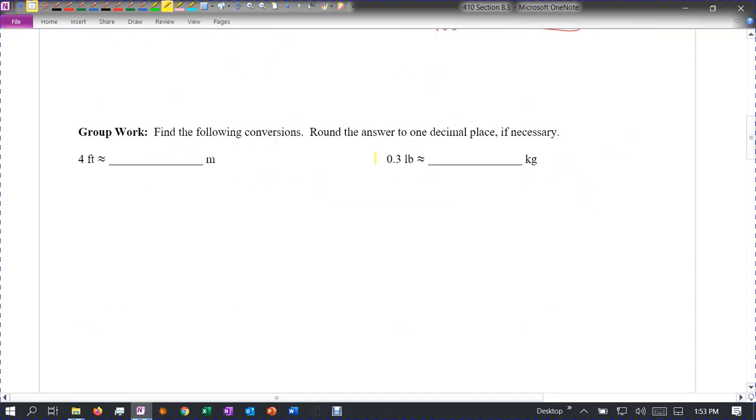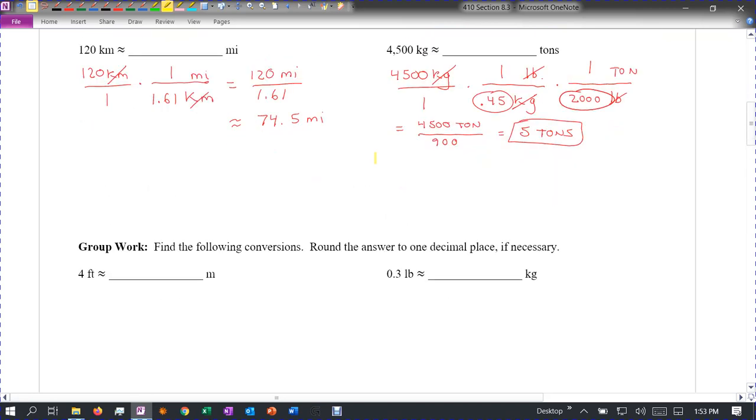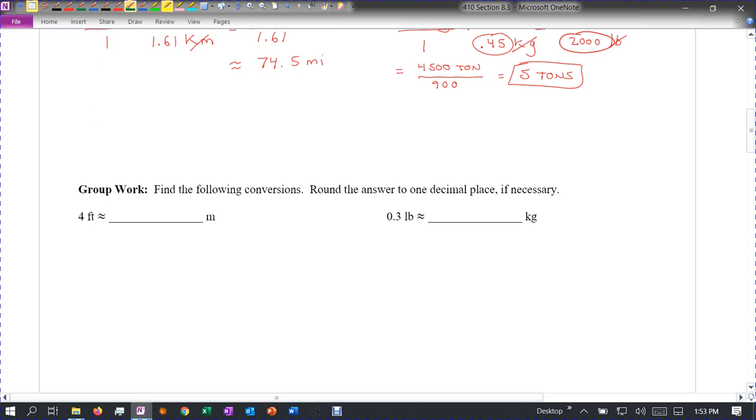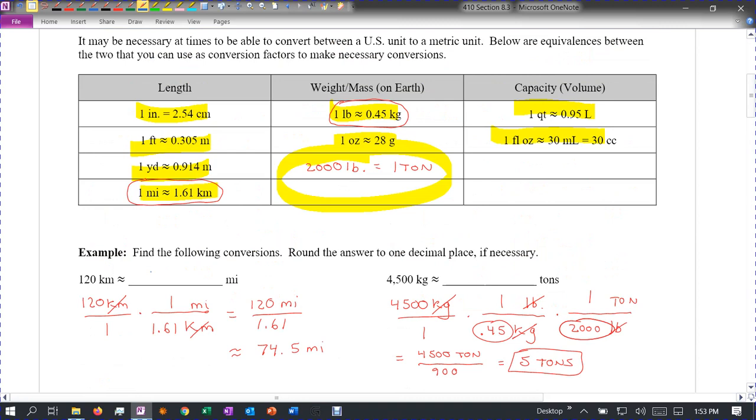So for group work, let's go 4 feet to meters and .3 pounds to kilograms. So let's try and do the 4 feet to meters. So 4 feet over 1 times, let's see if we have anything that goes from feet to meters. And we do.